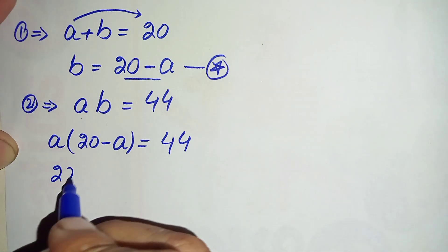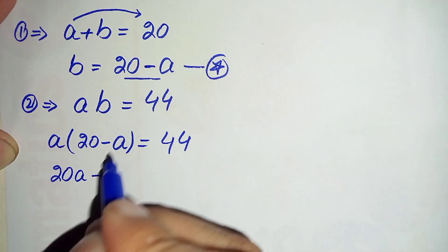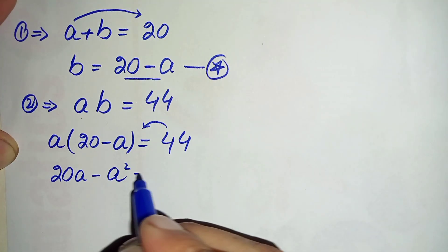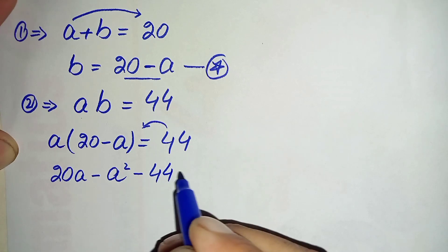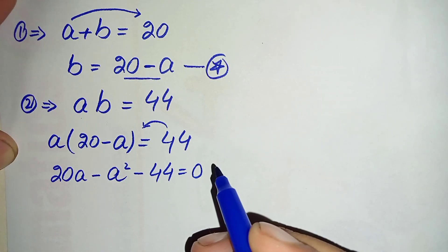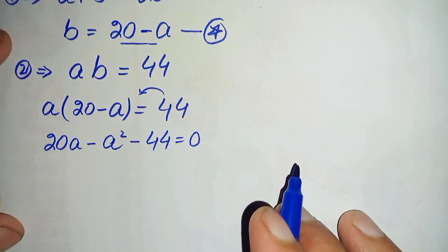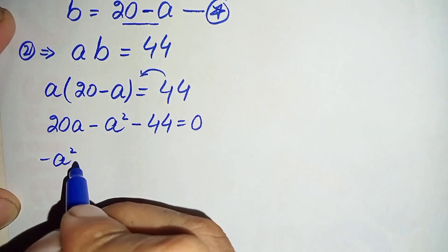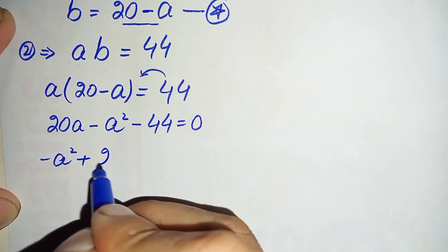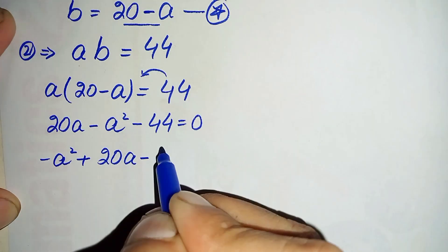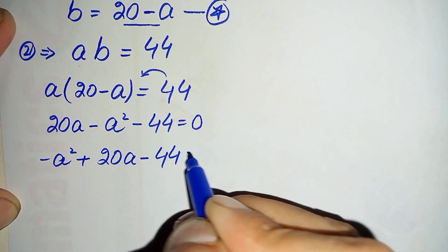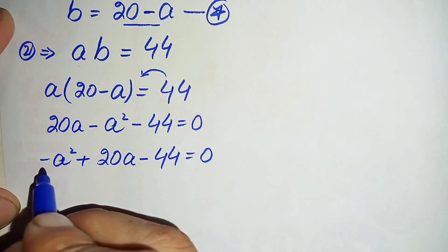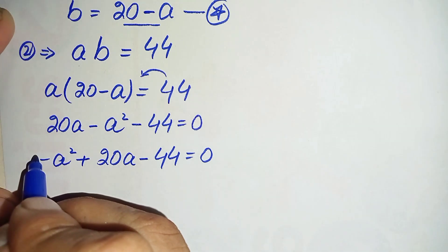We distribute a inside the parenthesis, giving us 20a minus a squared. Moving 44 to the left-hand side gives us 20a minus a squared minus 44 = 0. Rearranging by degree of a, this becomes minus a squared plus 20a minus 44 = 0.